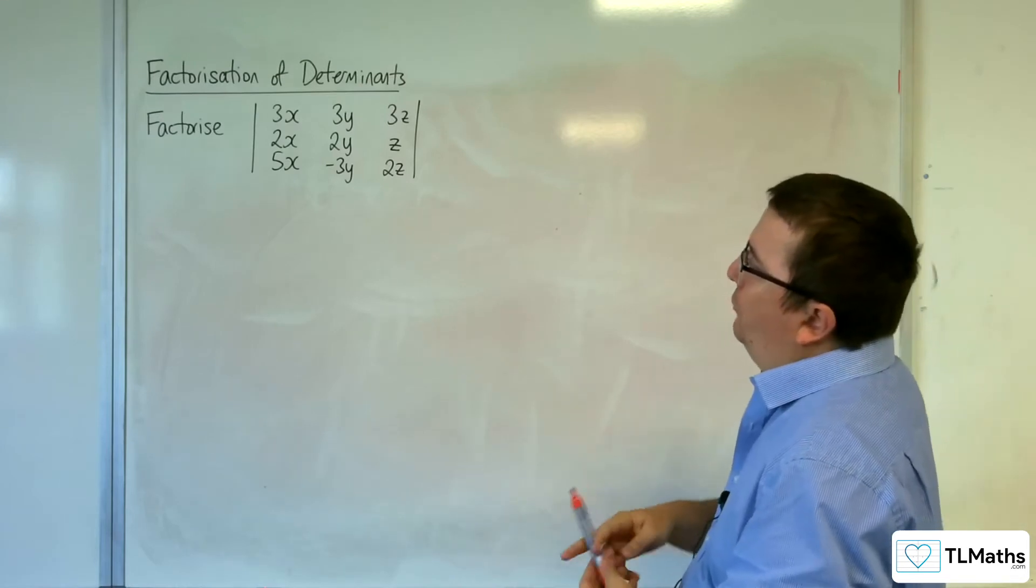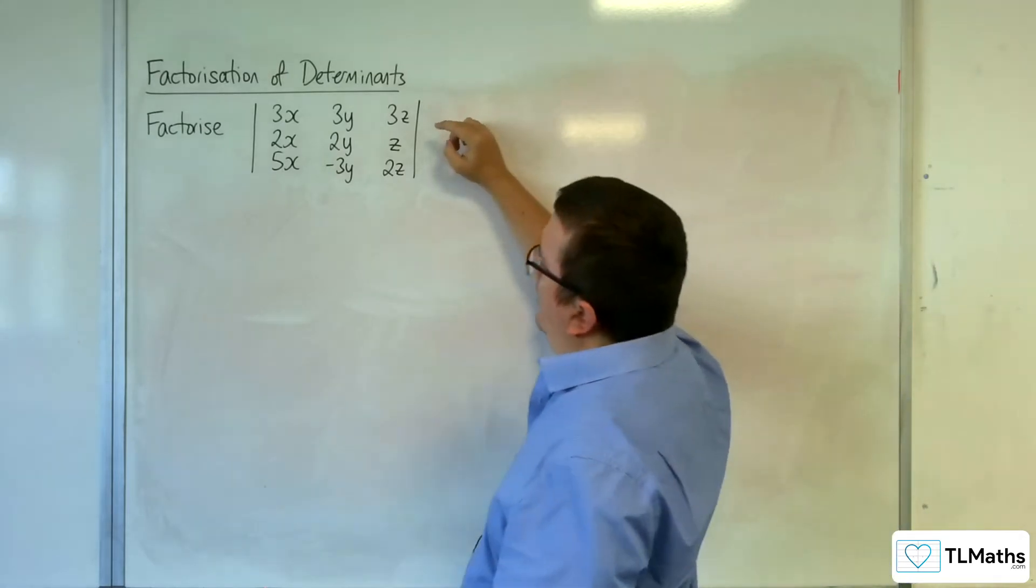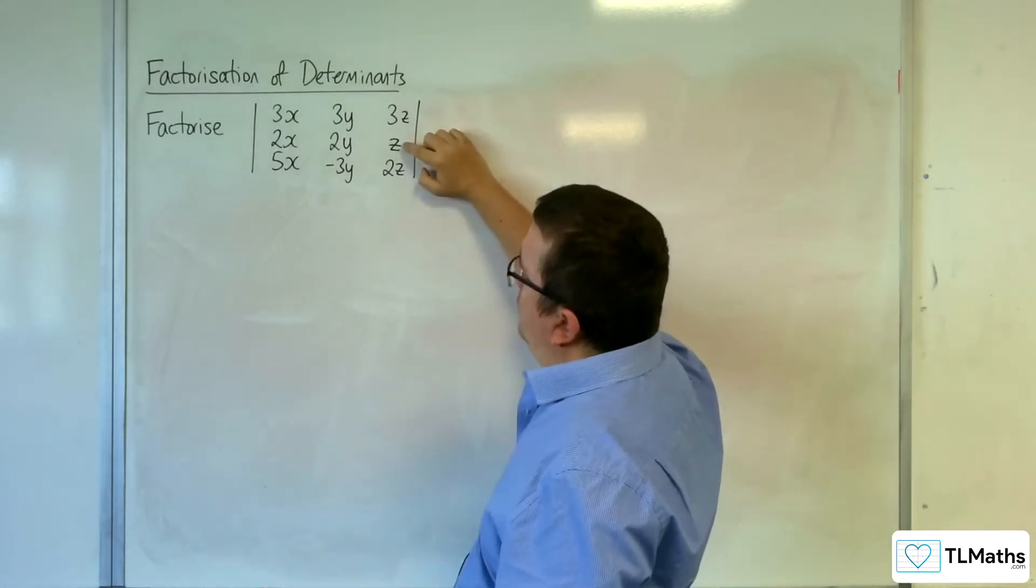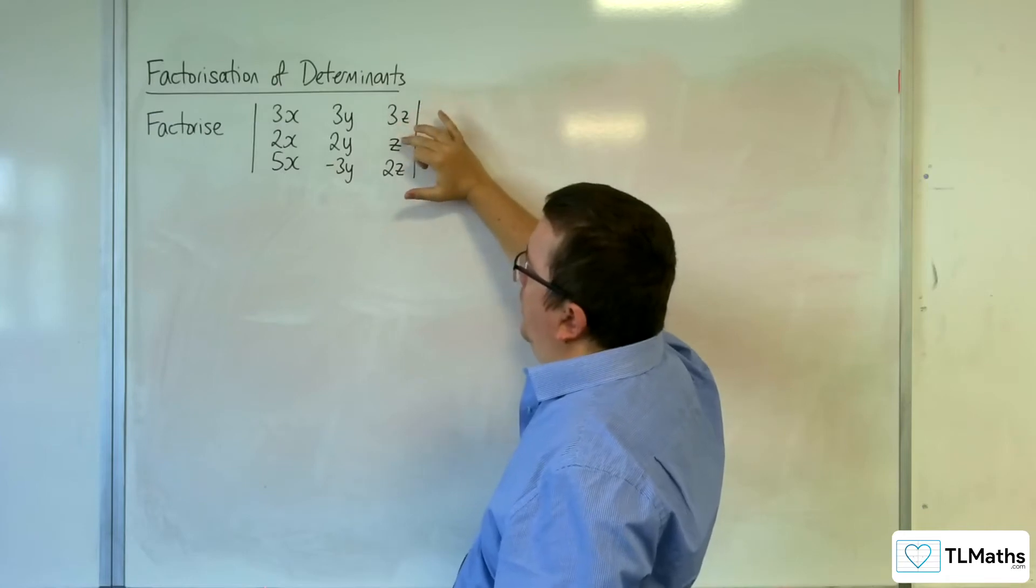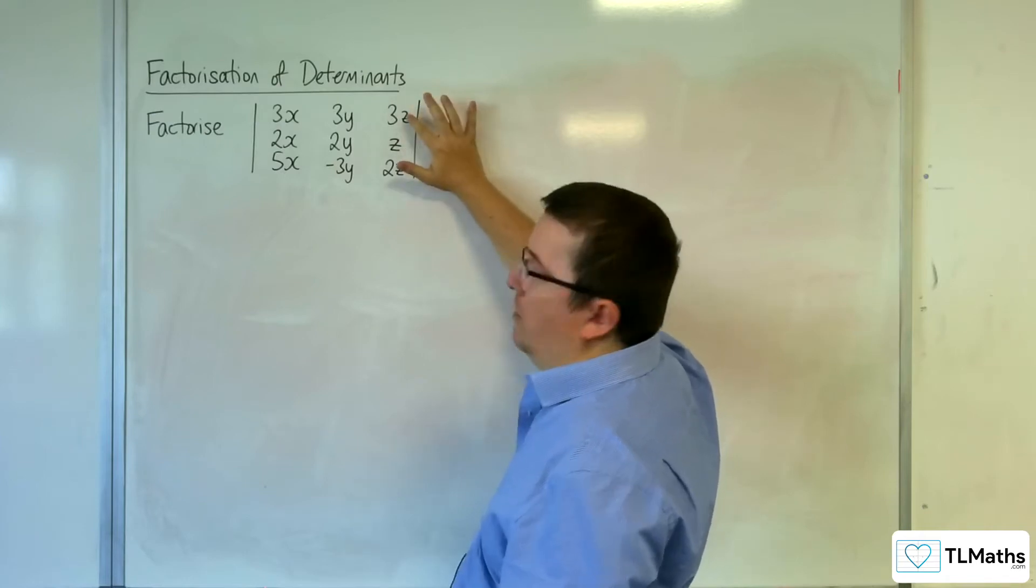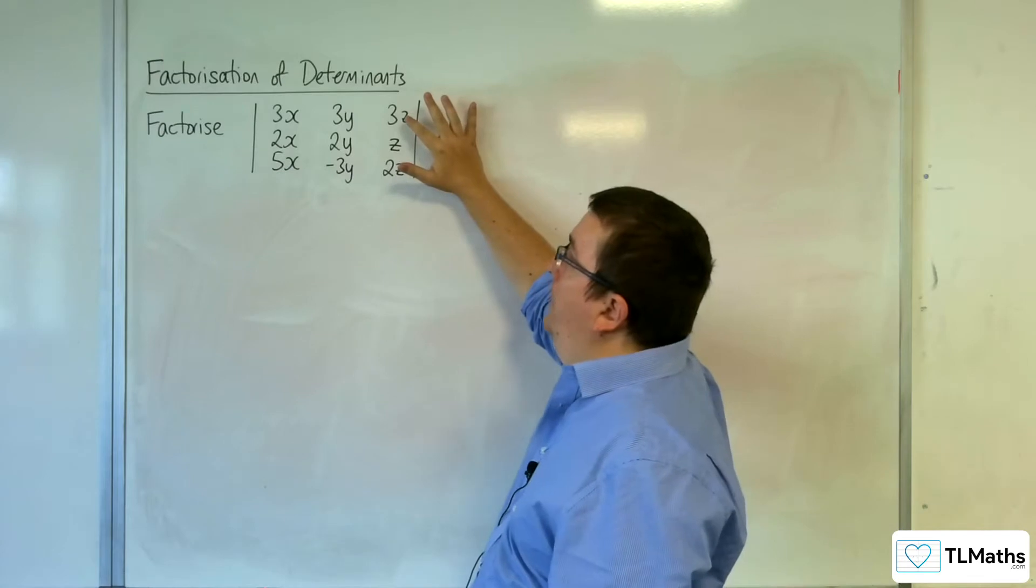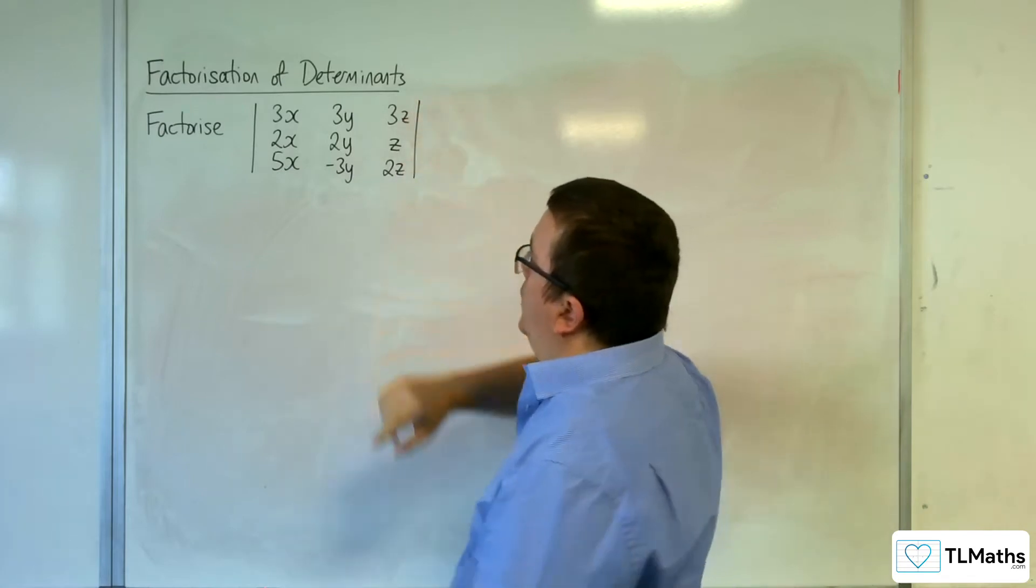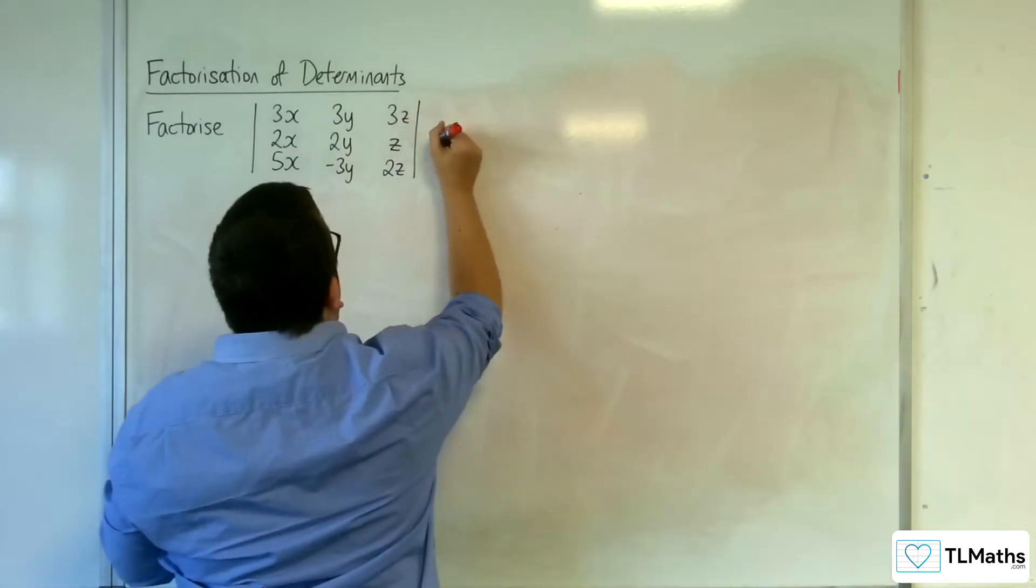So, what we're going to do first, because I've just spotted I've got z and 2z make 3z, if I subtract row 2 and row 3 from row 1, then I'm going to get a 0 in the top row. So that's good.